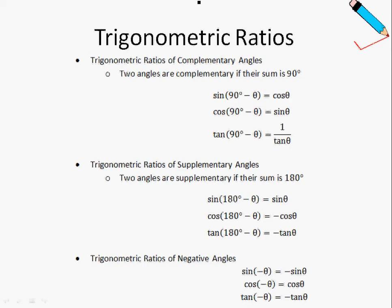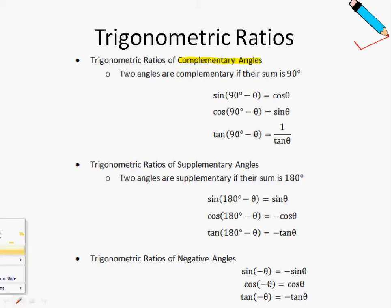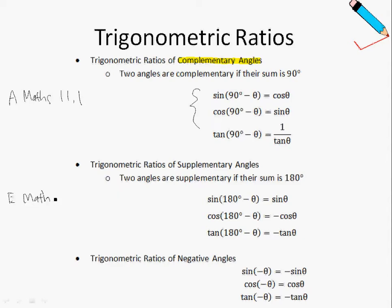Before we move on to something else today, we will basically just recap what we have learned so far. Recall that these are the trigonometric ratios for complementary angles — we have already learned this in chapter 11.1, so if you have forgotten, please go review those videos. For supplementary angles, this is mentioned in the e-math trigonometry videos, so you can check those out if you have forgotten.